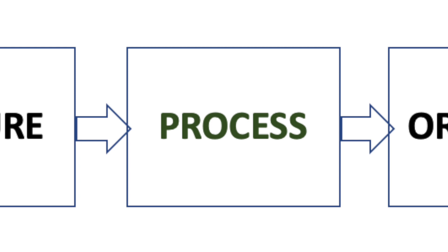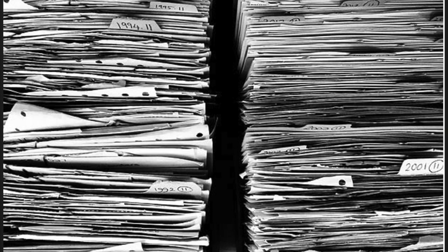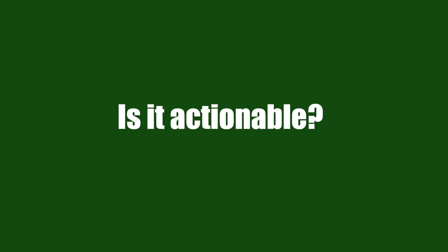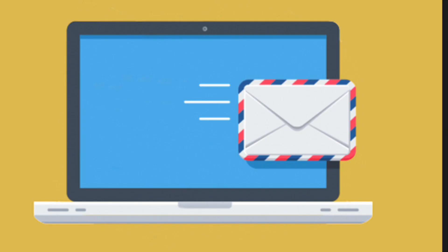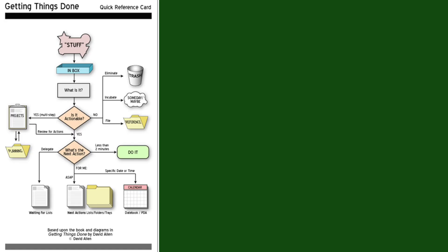The second step is Process. Here you need to review and process everything you've collected in your inboxes. This means you have to decide where things belong — what kind of task is it, is it actionable, and what's the next action? So when reviewing your inboxes, do not put anything back in the inbox. Decide where each item belongs. If no action is possible or necessary, choose one of the three options.